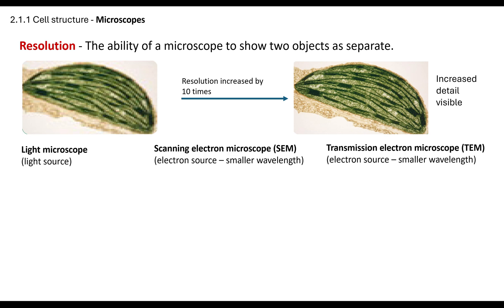You need to know about the three different types of microscopes. Because you are sitting your exam in 2025, you do not need to know about the fourth one which was on the old spec, so make sure you're looking at the correct specification. The light microscope uses light as its source — visible light has a very specific wavelength which we utilise to observe the specimen. The scanning electron microscope and the transmission electron microscope both use electrons as their source, and because they use electrons they have a smaller wavelength — that is an important distinguishing feature between an electron microscope and a light microscope.